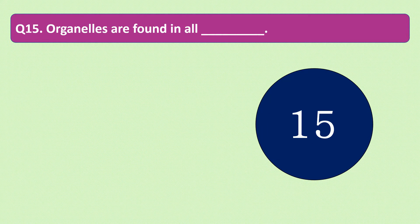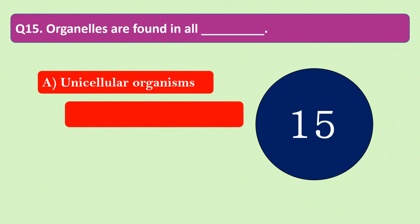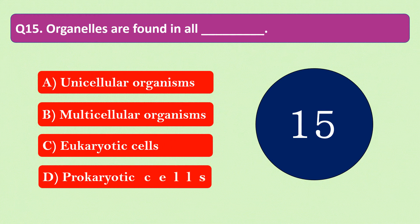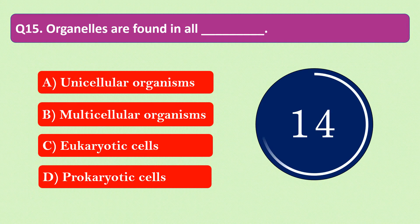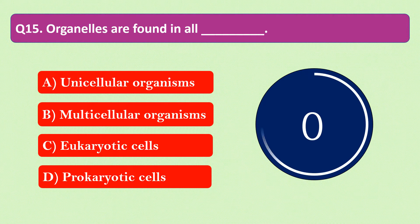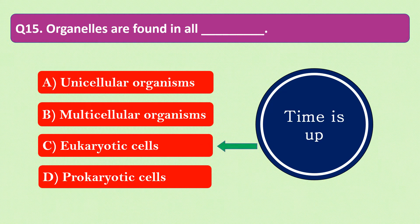Question number 15: Organelles are found in all dash. The options are A. Unicellular organisms, B. Multicellular organisms, C. Eukaryotic cells, or D. Prokaryotic cells. Your time starts now. Your time is up and the right answer is option C: Eukaryotic cells. Organelles are found in all eukaryotic cells.